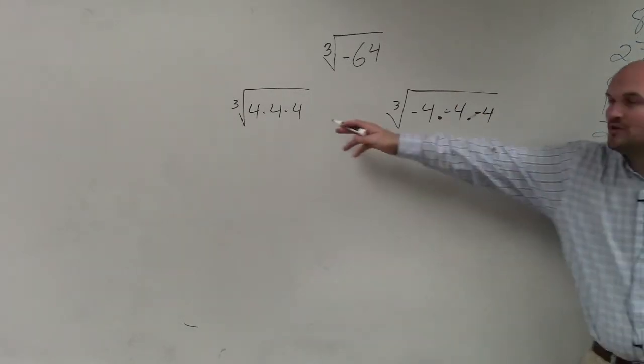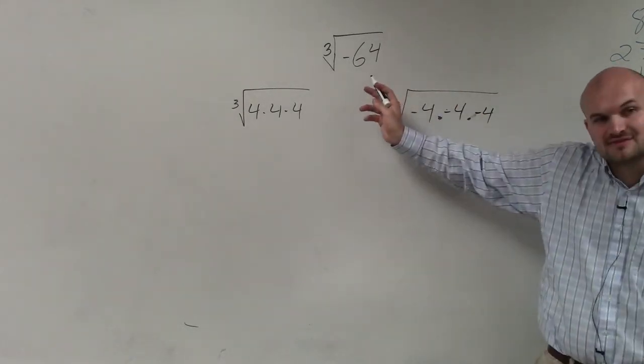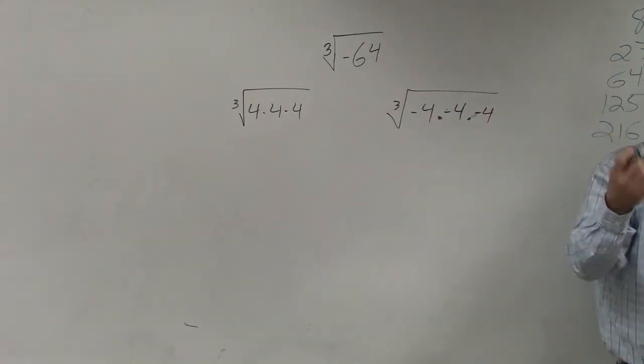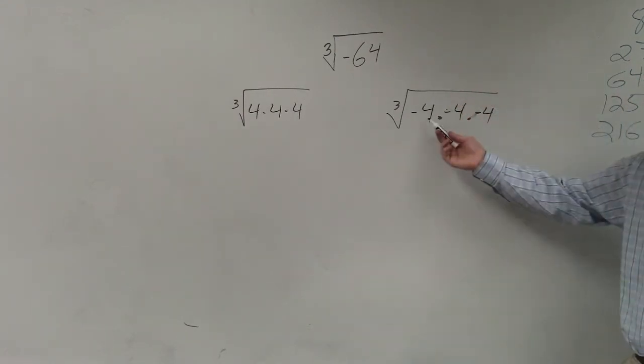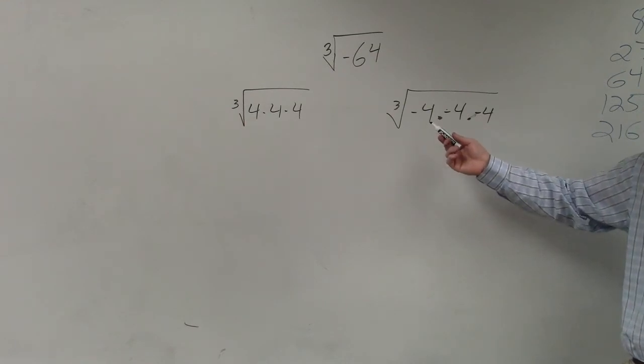I see that 4 times 4 times 4 gives me positive 64. But remember, the cube root is saying what number multiplied by itself three times gives me negative 64. And that ends up being negative 4.